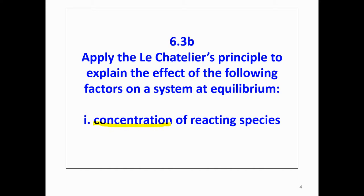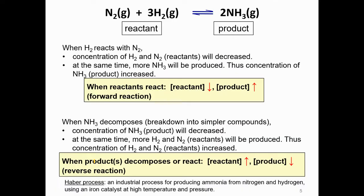Before we proceed to Le Châtelier's Principle with the factor of concentration, I would like to highlight again what is the meaning of reversible reaction. When nitrogen reacts with hydrogen, the concentration of reactants will decrease. At the same time, more ammonia — the product — will be produced, so the concentration of ammonia will increase. When reactants react, concentration of reactants reduces and concentration of product increases. So it is a forward reaction.